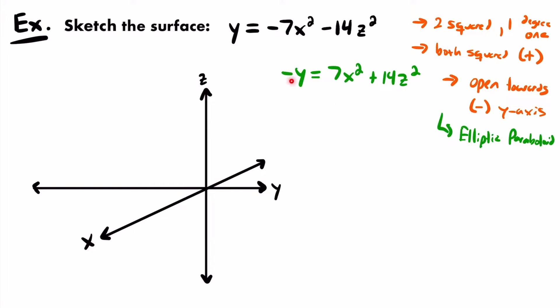Something interesting about this equation is that there is no extra constant term — no plus or minus value added. That means this elliptic paraboloid is not shifted in any way. The vertex, or where it starts, will be at the origin. It will start at the origin and open up towards the negative y-axis. Since it starts at the origin, we can't plug in 0 for y to find a trace of an ellipse — we'll have to plug in some other value along the negative y-axis.